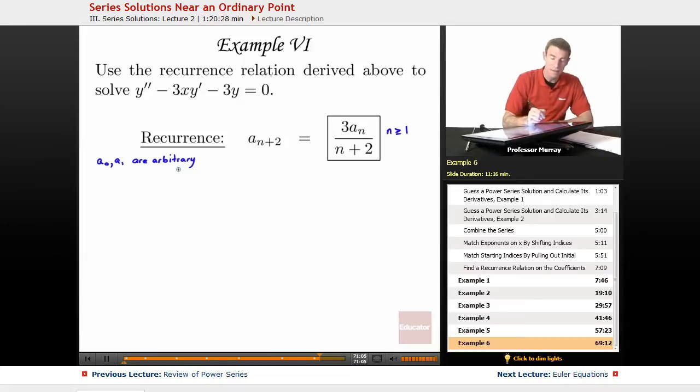But then for A2, I figured out on the previous slide that A2 is equal to 3A0 over 2. So that was from above, we worked that out, it actually came from example five.